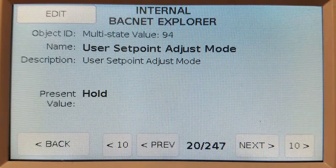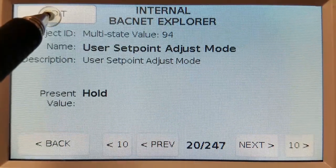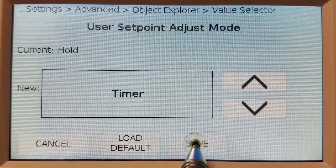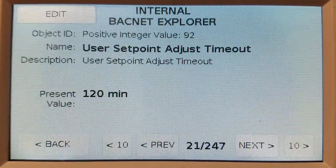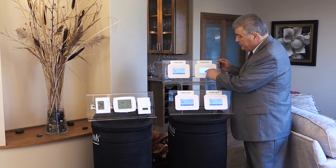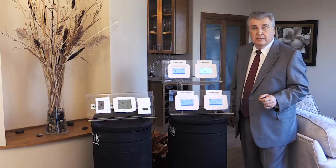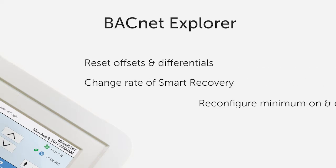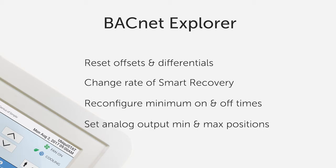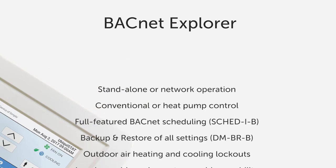If you want that user setpoint adjustment to return to the program setpoints after a couple of hours, simply change the mode to timer and set the timeout to 120 minutes. Now, if the user lowered the cooling setpoint from 74 to 72, it will automatically return to 74 after two hours. And there are dozens more functions available on the built-in Explorer: reset the offsets and differentials, change the rate of smart recovery, reconfigure minimum on and off times, set analog output minimum and maximum positions — the list goes on and on.